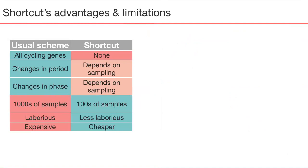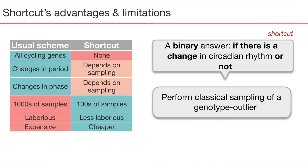Unarguably, the advantages of the shortcut are a significant reduction in the number of needed samples and a consequent reduction in labor and costs. It provides a binary response to the question of whether there is a change in circadian rhythm — just yes or no. However, after an outlier has been identified, we can invest time and resources into performing a deeper study of that particular outlier using the classical scheme, being sure that there is indeed a significant change in the molecular circadian rhythm.